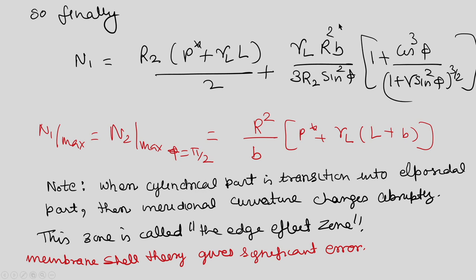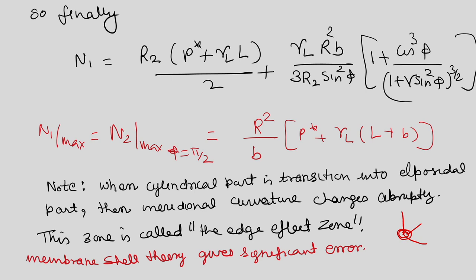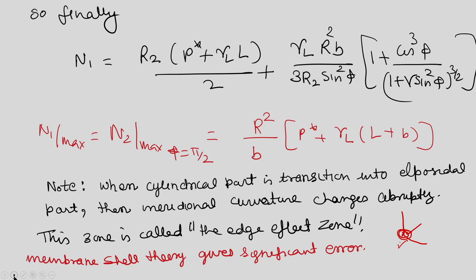When the cylindrical part transitions into the ellipsoidal part, the meridional curvature changes abruptly. This zone is called the edge effect zone or end zone. In this case membrane theory does not give accurate results - membrane theory is valid only slightly away from that zone. In this zone high stresses and bending moments are present, which are important for design as the structure may crack at these joints. Therefore we must find the moments and couples at these joints, and for that purpose the moment theory of shells is needed.